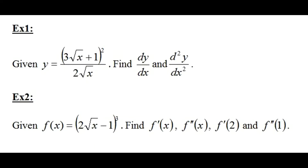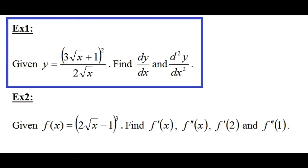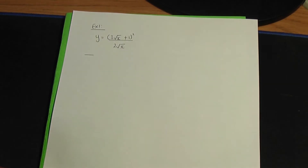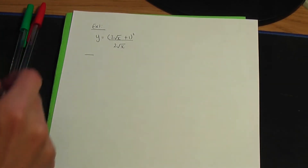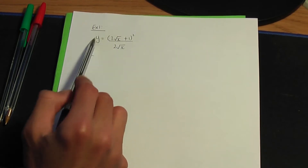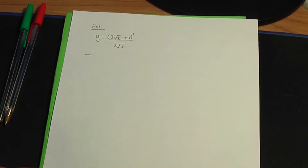Let's look at example number one. Given y equals (3√x + 1)² divided by 2√x, we need to work out dy/dx and d²y/dx². Back to paper and pen. Let's first calculate dy/dx. Remember in the last video I did examples showing you how to differentiate a function like this using the basic rule of differentiation.